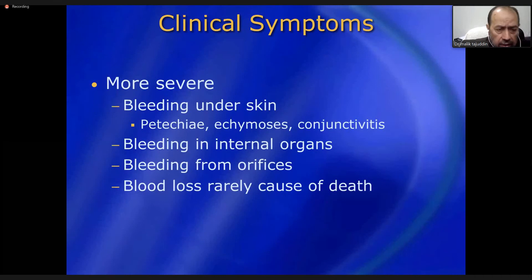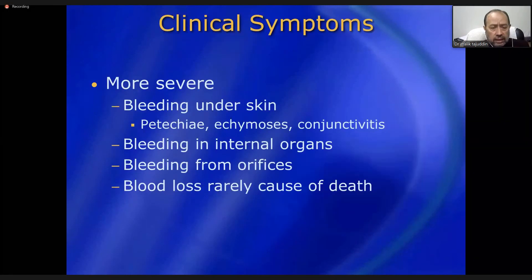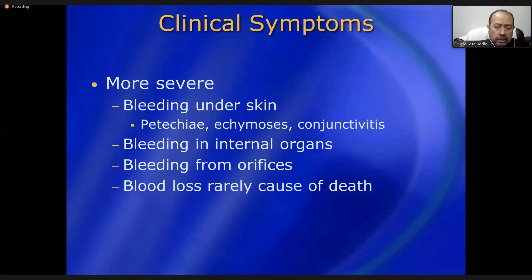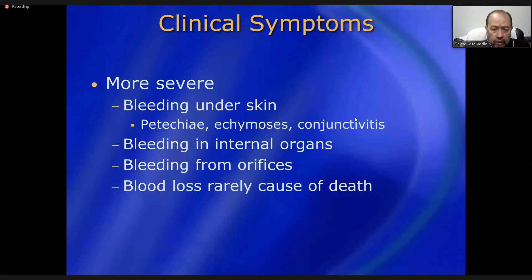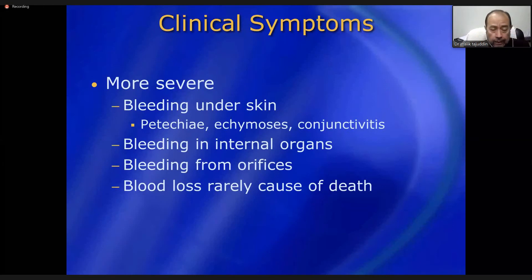In more severe hemorrhagic cases, there is bleeding under the skin, petechiae, ecchymosis, conjunctivitis, and bleeding in internal organs and from different orifices. There may be hemoptysis, hematemesis, melena, and epistaxis. Blood loss rarely causes death directly, but mortality has declined with better nursing and supportive treatment.